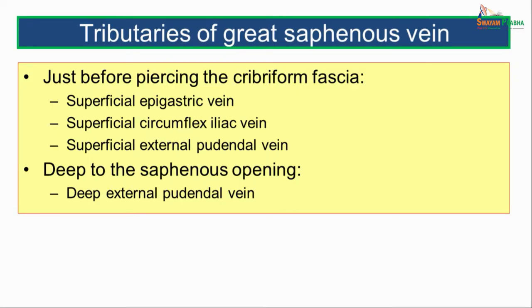Deep to the saphenous opening, just before the great saphenous vein terminates, it receives the deep external pudendal vein. This deep external pudendal vein passes posterior to the spermatic cord and drains the venous blood from the anterior part of the perineum. These are the various tributaries of the great saphenous vein.